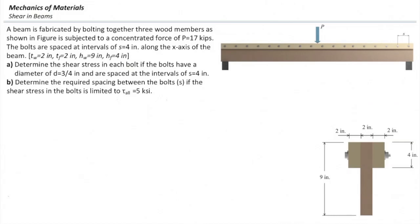In Part A, we assume the spacing between the bolts is 4 inches and each bolt has a diameter of 3/4 inch, and we want to find the shear stress developed in the bolt. In Part B, we assume the maximum shear stress in the bolt is limited to 5 ksi, and we want to find the appropriate spacing between the bolts. I will solve Part A and ask you to solve Part B.